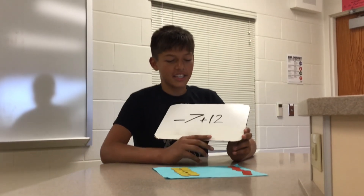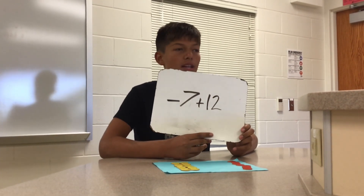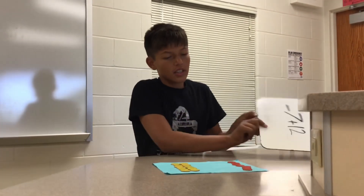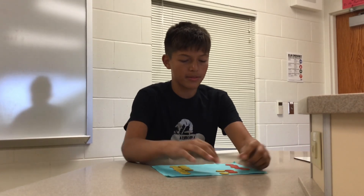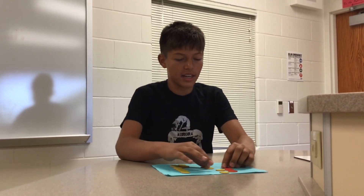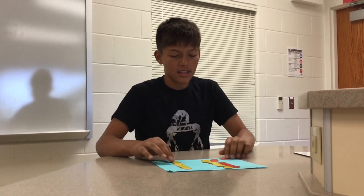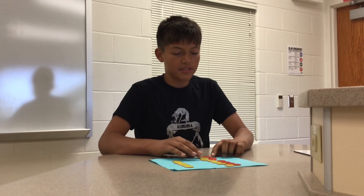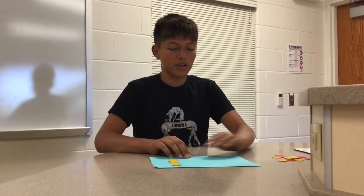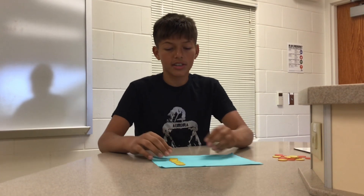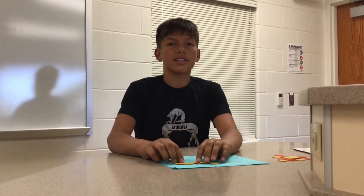For my addition problem, I'm going to be showing you negative seven plus twelve. What you do is you match them up with the yellows and the reds, and after you do that, the ones that are matched up you just remove them because they equal zero, and then you're left with positive five.